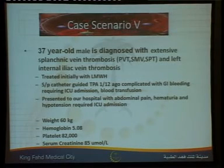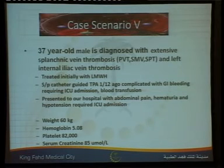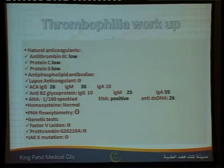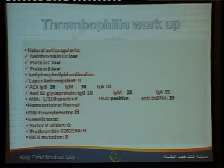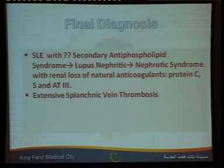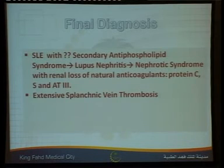Fifth case: a patient with splanchnic vein thrombosis transferred from another hospital with low albumin. Thrombophilia workup revealed all three natural anticoagulants — protein C, protein S, and antithrombin-3 — were low, which is impossible as true inherited deficiency. He was diagnosed with nephrotic syndrome; 24-hour urinary protein was around 20g. This highlights the importance of looking for acquired causes of thrombophilia and the value of thorough history and physical examination — the patient had bilateral pitting edema that had been overlooked.